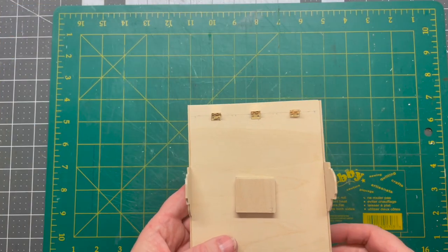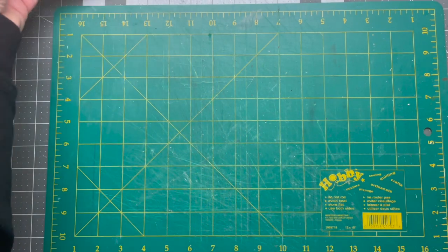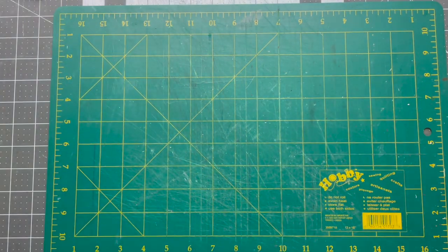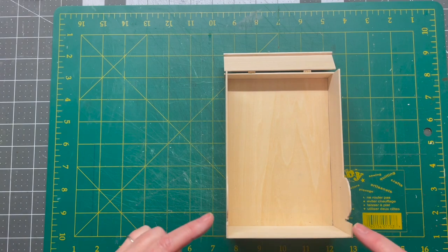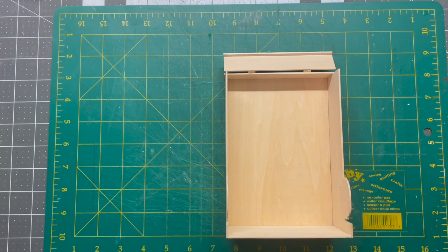So while we're letting those dry, I'm going to go back to the first piece that we put together and we're going to add the two pieces that go along the bottom. So you'll need pieces marked G.